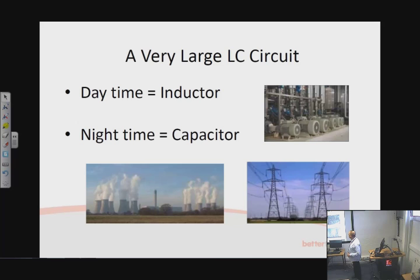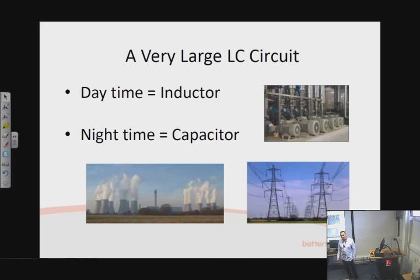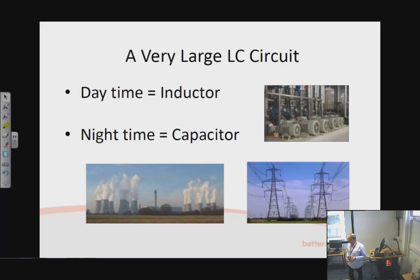A good example of a combined LC circuit is the national grid. The wires strung across the country have capacitance between them and to earth. During the daytime, industrial motors are generally inductive. At night, with those machines switched off, the grid becomes capacitive. The distribution engineers have to manage these effects — a major electrical example that brings home how stray inductances and capacitances are everywhere.